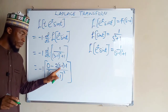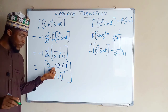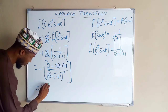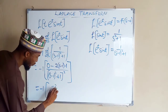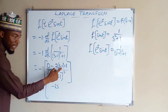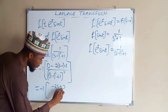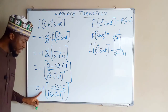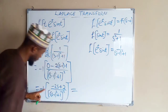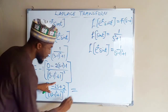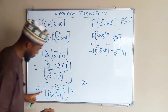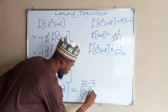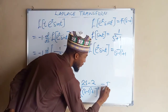Divide by the bottom squared, which is (s minus 1) squared plus 1, all to the second power. Zero minus this is still minus, so expanding: negative 2 times positive s gives negative 2s, and negative 2 times negative 1 is positive 2. After distributing the negative 1, we obtain positive 2s minus 2 in the numerator, divided by (s minus 1) squared plus 1, all squared — and this is our new function of s.